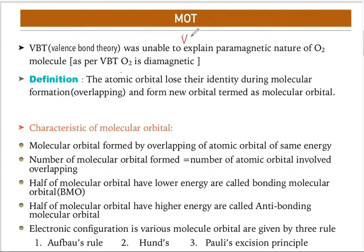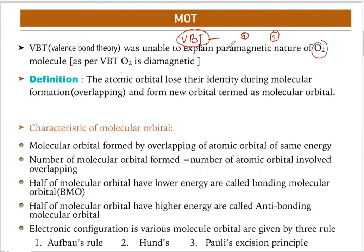Before MOT, we discussed Valence Bond Theory (VBT). VBT tells about the combination of unpaired electrons — a center atom combines with half-filled or unpaired electrons through overlapping. Now, if we consider the VBT theory of oxygen, according to VBT, oxygen is diamagnetic.